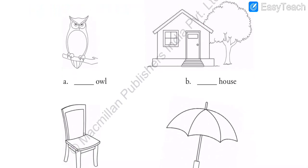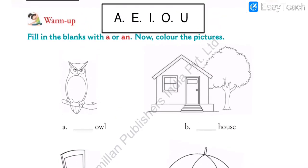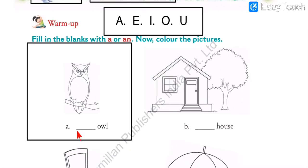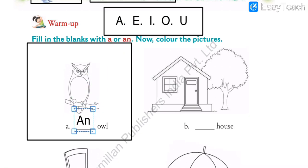Let us solve one of the pictures again so you can easily recollect yesterday's lecture. For example, let us solve blank A: 'blank owl.' What do you have to put in the blank? First, carefully observe the word written after the blank. The word is 'owl,' and it starts with the alphabet O. Since O is a vowel, we have to put 'AN.' An owl — this is what we solved yesterday.